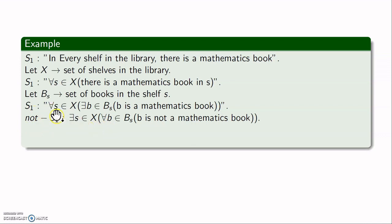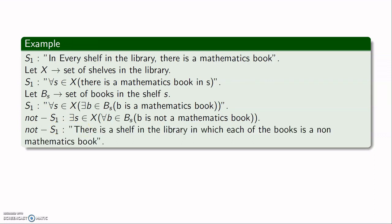When negating, each existential quantifier is replaced by a universal quantifier and vice versa. In plain English, the negation of S1 reads: there is a shelf in the library in which each of the books is a non-mathematics book. This is the negation of statement S1.